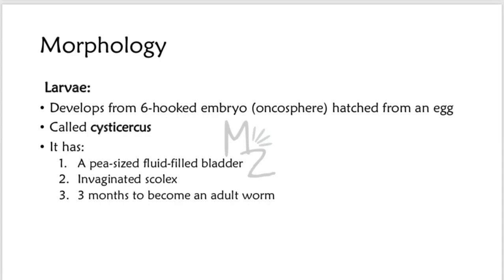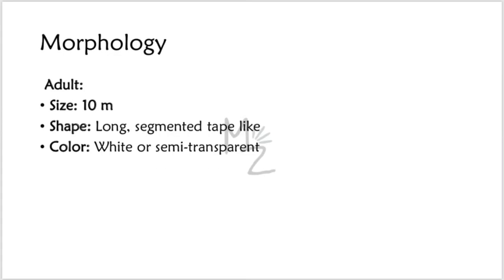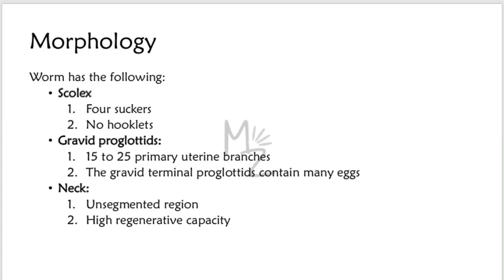It takes about three months to become an adult worm. The adult worm is about 10 meters in length — it is long, segmented, and tape-like. Its segments are called proglottids, and the mature segments containing eggs are called gravid proglottids or uterine branches. It is white or semi-transparent in color. The body of the adult worm has three parts: the scolex, the neck, and the gravid proglottids.